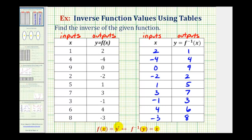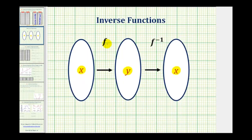One other nice way to show this is to map this relationship. Here's our function f — when the input is x, the output is y, and this becomes the input into the inverse function, which returns the output of the original value of x. So we can see these two functions, if they're inverses, undo each other. I hope you found this helpful.